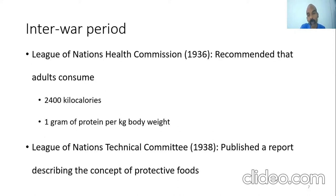In the interwar period, the League of Nations Health Commission conducted studies on nutrition. In 1936, it recommended adults consume 2400 kilocalories and one gram of protein per kg body weight daily. The League of Nations Technical Committee in 1938 published a report that first described the concept of protective foods.